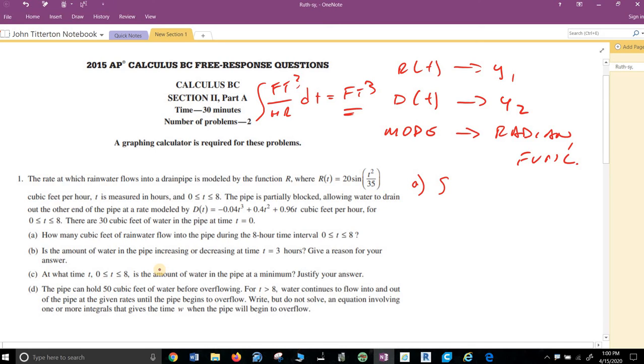We integrate that with respect to time, and we will get cubic feet. Then, we want to know how many cubic feet flow into the pipe. So, all I care about is the R of T. This is the integral, 0 to 8, R of T, DT, and you will find that is 76.570.